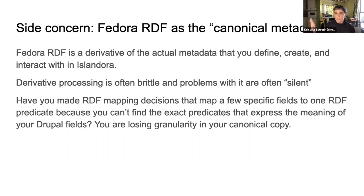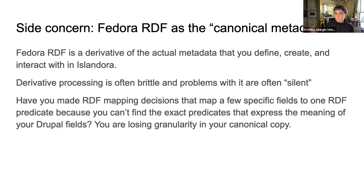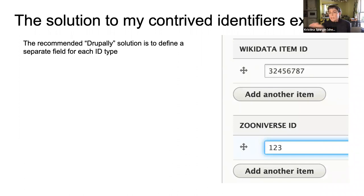Sometimes we set up very specific fields for our use cases that don't have an RDF predicate we can find, so we then lump those together using a broader predicate that does exist — and you have the case where you're actually losing data in your canonical copy if you're using the RDF, which may be fine for you, but you should be aware that that was happening. There's an easy Drupal solution for my identifiers example: just define a separate field for each ID type. So we've got a Wikidata item ID field and a Zooniverse ID field, and then everything works as expected.